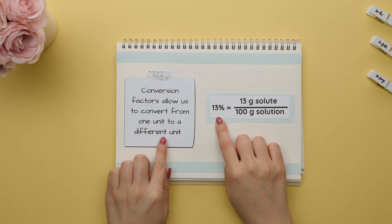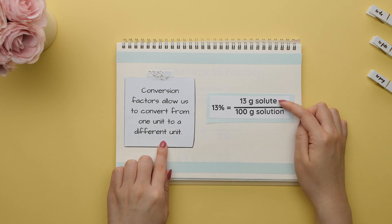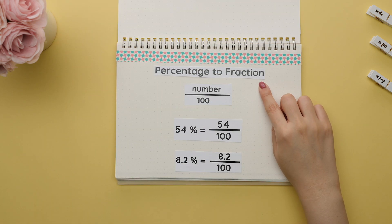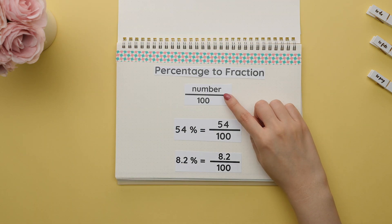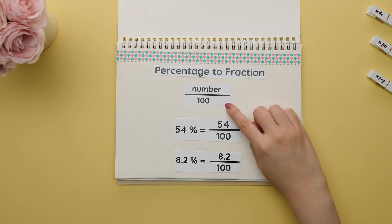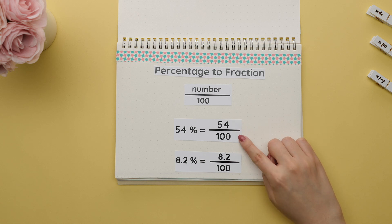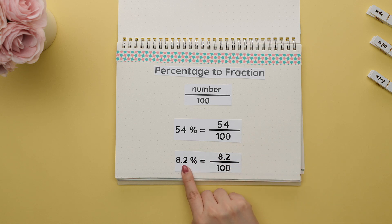It's also important to know how to write a percentage as a fraction, which will be used often in chemistry. These percentages are like hidden conversion factors that allow us to convert from one unit to a different unit. To write a percentage as a fraction, place the number given as the numerator divided by 100. For chemistry purposes, there is no need to simplify, and if a percentage already has a decimal, you still write it the same way.